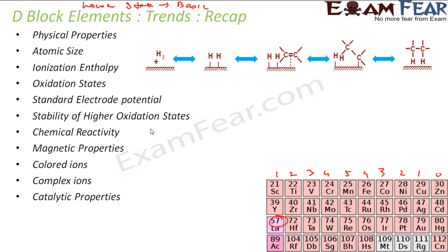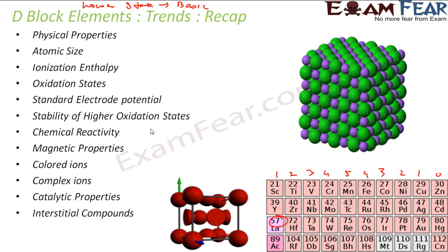Then we talked about interstitial compounds. Interstitial compounds are formed when small atoms like hydrogen, carbon, and nitrogen are trapped inside the crystal lattice of metals. They are typically non-stoichiometric — for example, TiH₁.₇. These interstitial compounds have different physical properties; they have higher melting and boiling points than the pure metal.